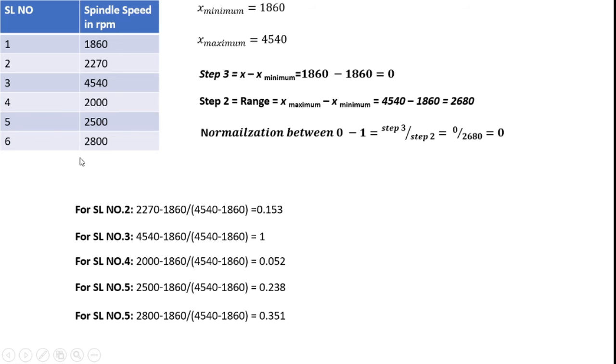Similarly, I consider serial number 2. Here, the x value is 2270. The same minimum value according to this table is 1860, divided by the x_max minus x_minimum is 4540 minus 1860. So I can get the value in between 0 to 1.